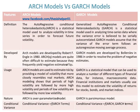Whereas, GARCH is a statistical model that can be used to analyze a number of different types of financial data, for instance macroeconomic data. Financial institutions and markets usually use this model to estimate the volatility of returns for stocks, bonds, and market indices. ARCH is an over-parameterized model, whereas GARCH is a parsimonious model.